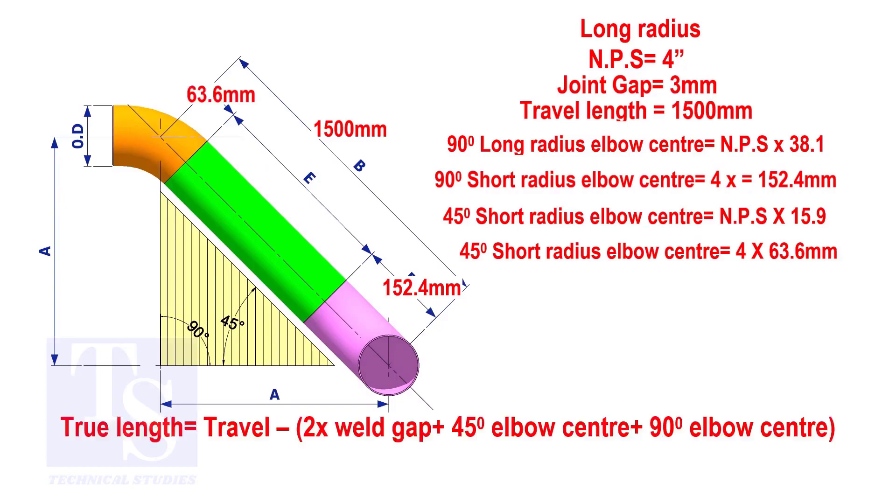Apply the calculation. The true length of the pipe is 1278 millimeters.